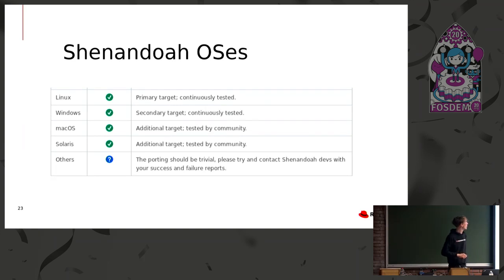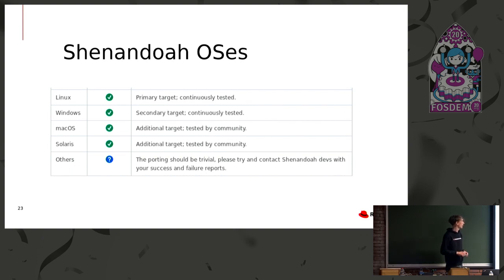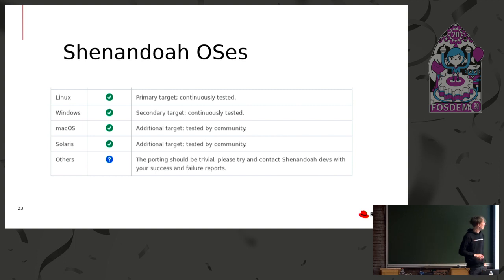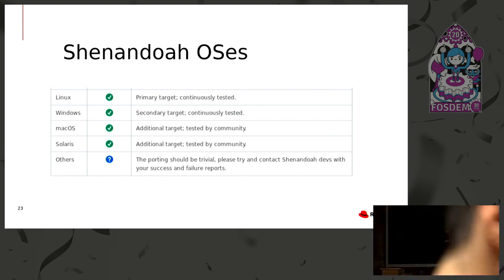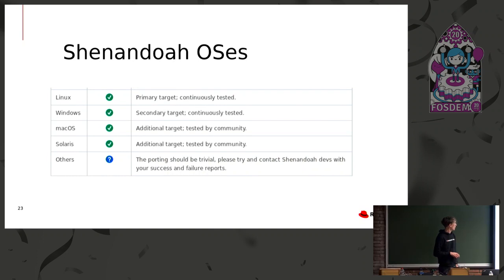For operating systems, we have Linux as our primary target — it's very continuously tested. We have Windows as a secondary target, also continuously tested in CI. We have macOS support and Solaris support, which is basically done by the community. Operating systems are very easy — we have zero operating system-specific code in Shenandoah, which makes it very easy to port to new operating systems. It's mostly a matter of making the toolchains happy and compiling the code. If you have any needs here, contact us.